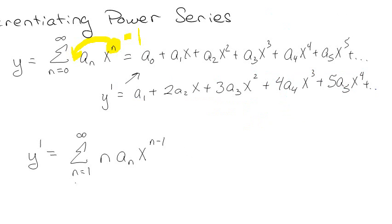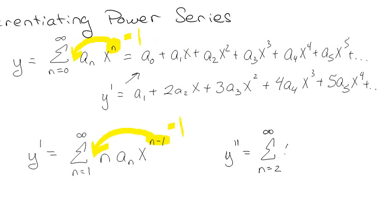Basically the idea is whenever you differentiate, you have to increase the starting index by 1. For a second derivative, I pull the coefficient down again: starting the summation at n equals 2, I get n times (n minus 1) times a sub n times x to the n minus 2. And really when you're differentiating, that's all you do — repeat that process and remember to change your indices each time.